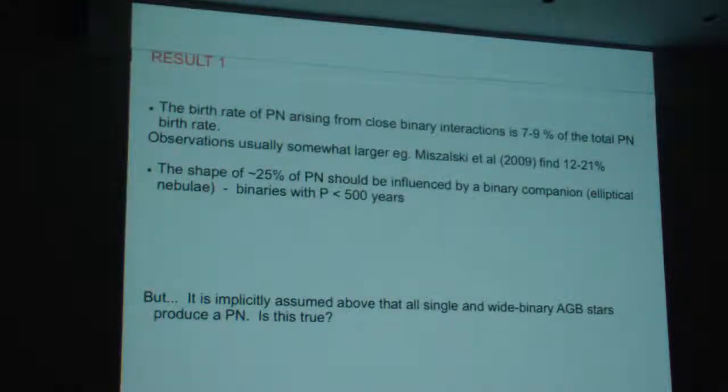And I guess the important thing here is that you get a birth rate of planetary nebulae arising from post-binary interactions is about 7 to 9% of the total PN birth rate. Now observations of binary PN tend to be somewhat larger than this. But that's not a problem because if you look at post-AGB stars, you find that the photospheres of those stars, and these are binary post-AGB stars, are devoid of refractory elements.